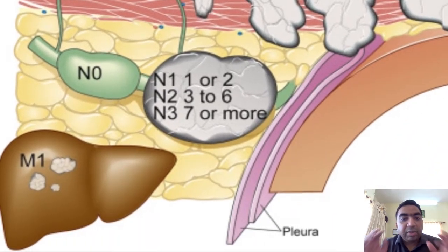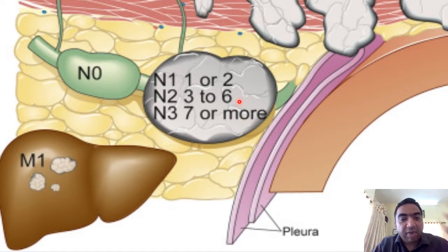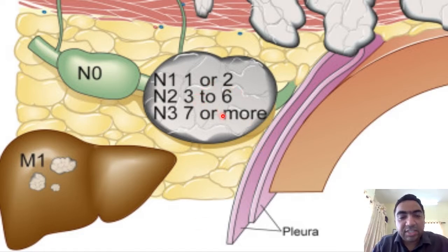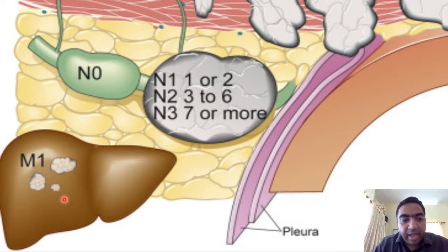For N staging: N1 is 1–2 positive nodes, N2 is 3–6 positive nodes, N3 is 7 or more positive nodes, and M1 indicates distant metastasis.